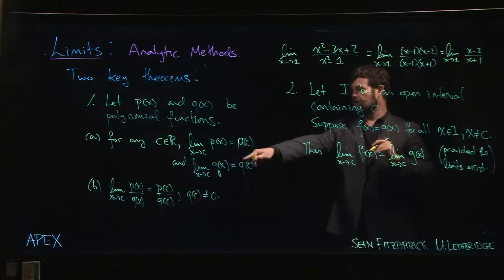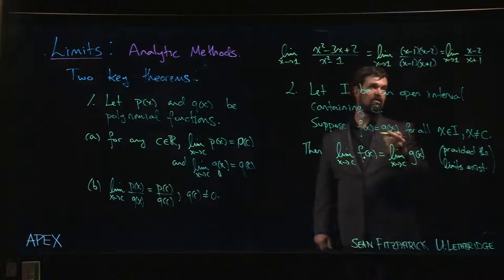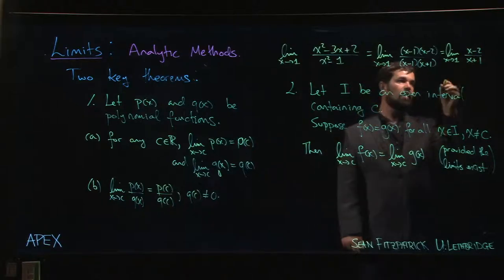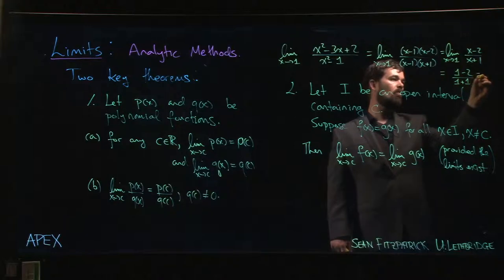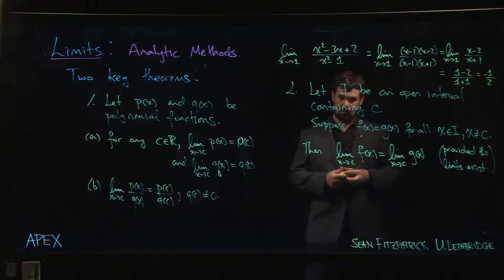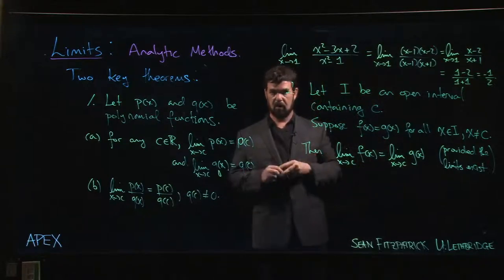Using this result here for rational functions, I know that I can evaluate this by just plugging in X equals one. So I get one minus two over one plus one, so I get minus one half for my limit. We'll be looking at a few more examples of this type very shortly.